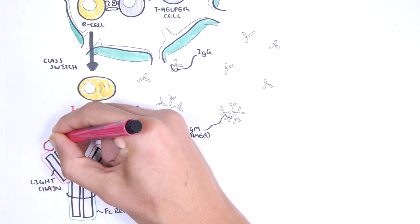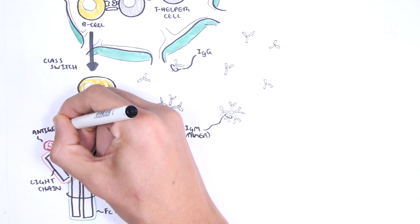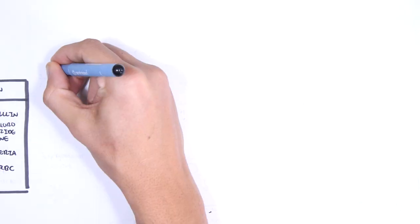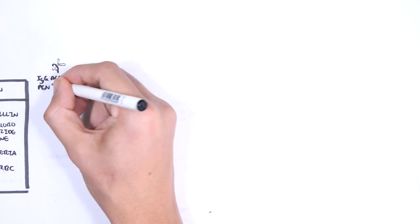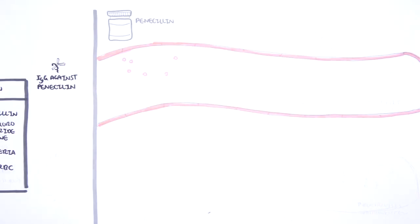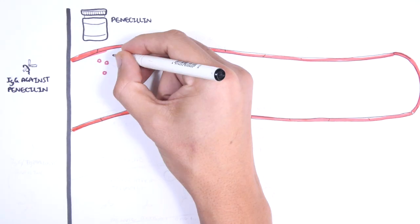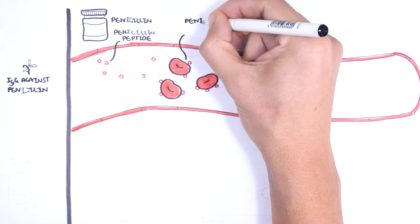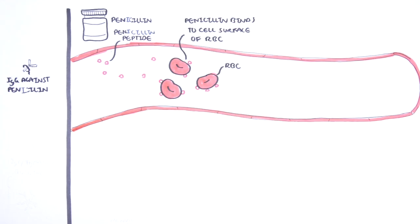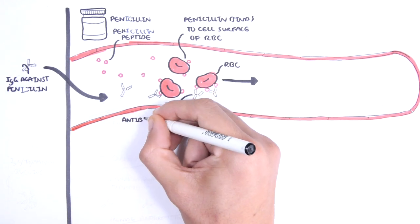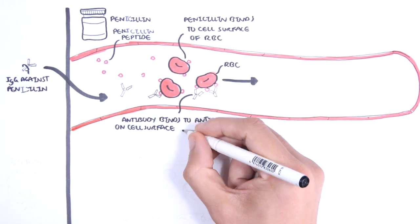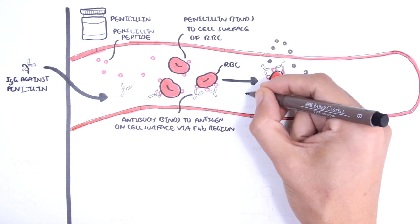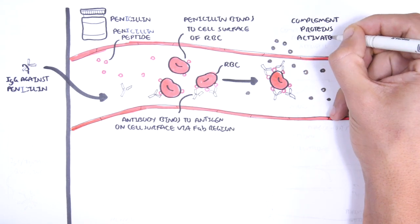The FAB region binds to specific antigens. An example of a hypersensitivity type 2 reaction involves an IgG antibody produced against the antibiotic penicillin. Penicillins are able to bind sometimes onto the surface of red blood cells. On the rare chance, IgG penicillin antibodies bind to the penicillins via the FAB region on the cell's surface. Once bound, the IgG antibody activates complement via its FC region.